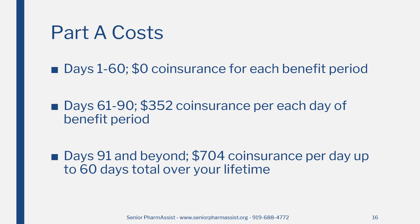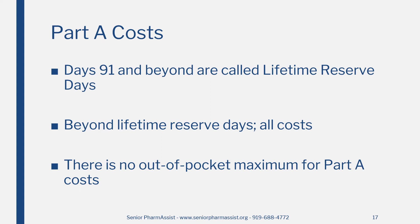In addition to the $1,408 deductible, you may also have to pay a co-insurance for your hospital stay depending on how long you were in the hospital. For days 1 through 60, there is zero co-insurance for each benefit period. For days 61 to 90, it would cost you $352 co-insurance for each day of the benefit period. Days 91 and beyond would cost you $704 co-insurance per day, up to 60 days total over your lifetime. These days 91 and beyond are called lifetime reserve days. Once you have used up your 60 lifetime reserve days, you are responsible for all costs for hospital stays longer than 90 days. There is no out-of-pocket maximum for Part A costs.